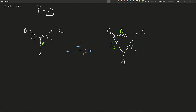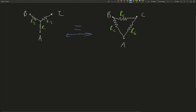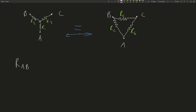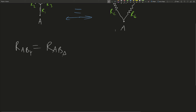Given one of these configurations, you can calculate the values for the other configuration of resistors, and we can come up with formulas to do that. Since these are symmetric — meaning these names are given arbitrarily — we only need to solve for one of these resistors to know the formula for all three. These are completely equivalent, so the resistance from A to B in the Y configuration equals the resistance from A to B in the delta configuration, and the same goes for B to C and A to C.